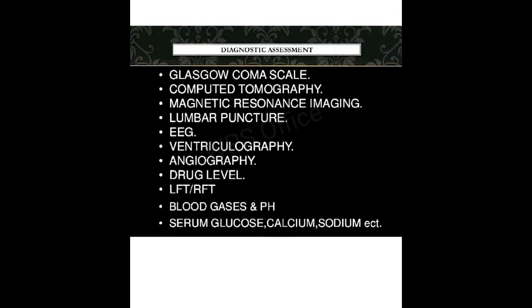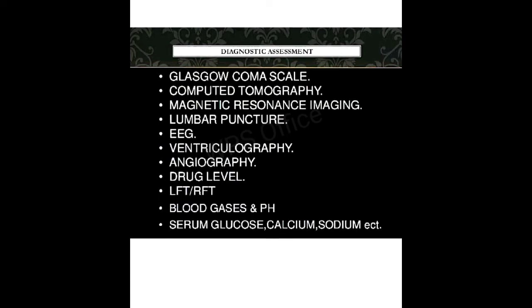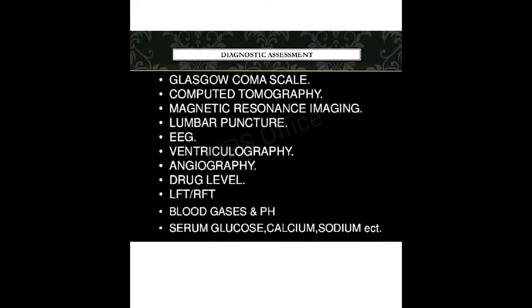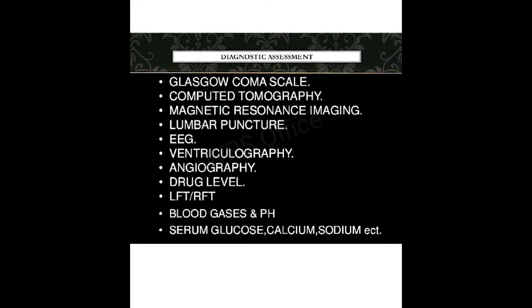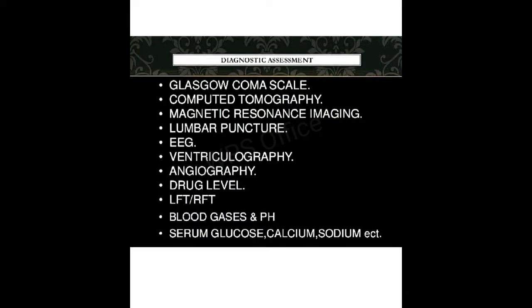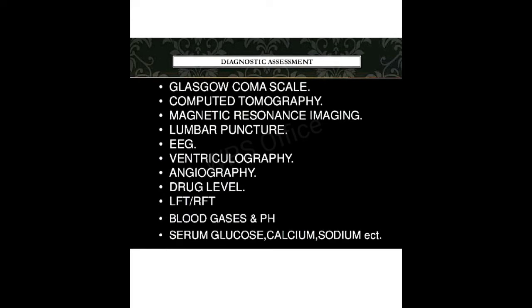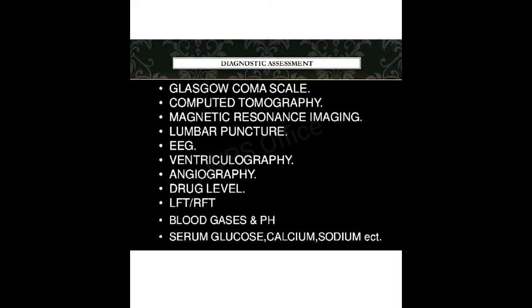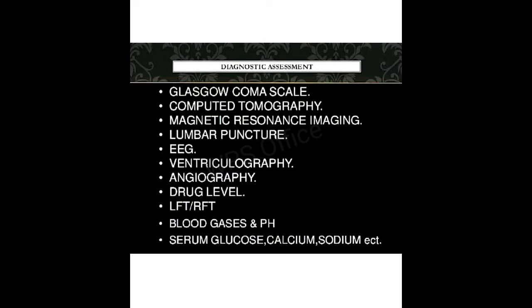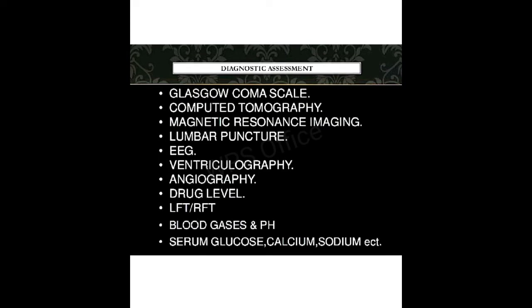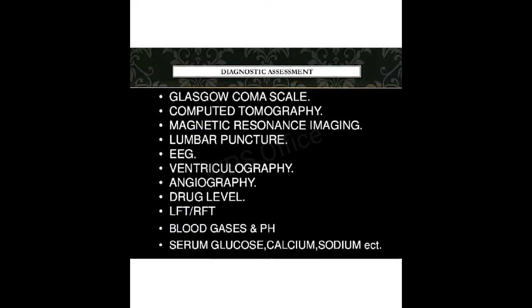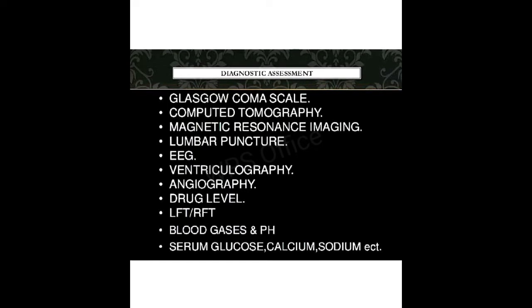In the diagnostic assessment, first we assess the Glasgow Coma Scale (GCS), examining eye response, motor response, and verbal response. CT scan and MRI are used to check for any structural changes inside the brain. Cerebrospinal fluid analysis examines the fluid inside the brain and spinal cord. EEG is a test used to detect abnormalities in the electrical impulses or brain waves. Ventriculography is used to determine the function of the ventricles inside the heart.